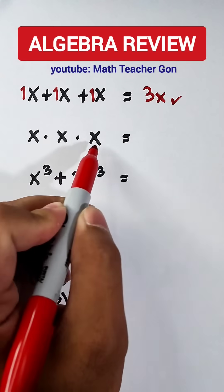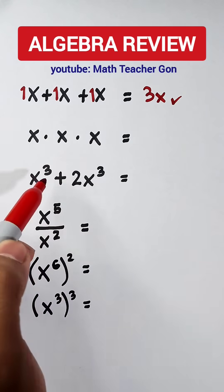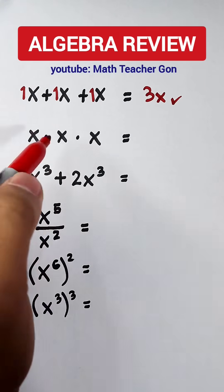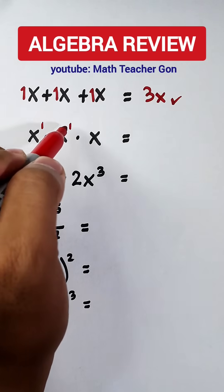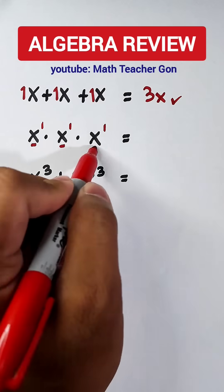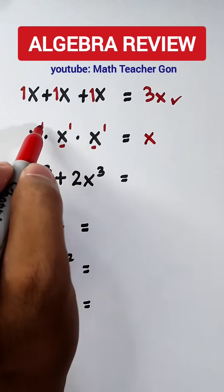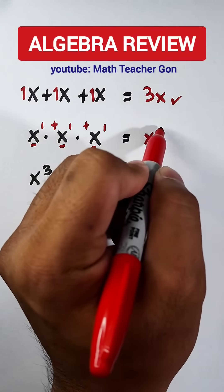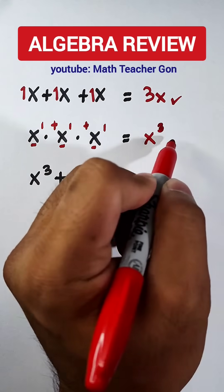x times x times x. This one is multiplication, but what you need to do here is add the exponents. Here we have the exponent of one as an invisible exponent. So copy the same variable, x, add exponents, one plus one plus one, you have your power of three, meaning the answer is x³.